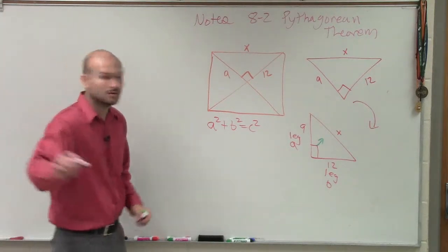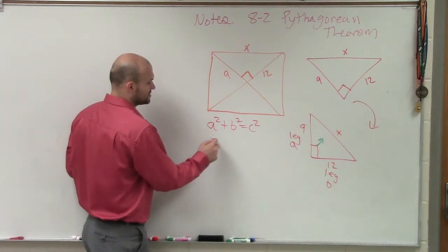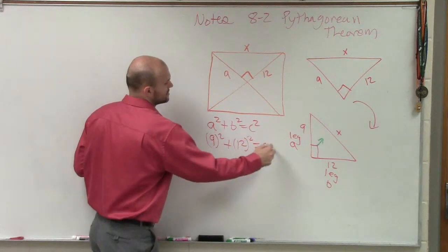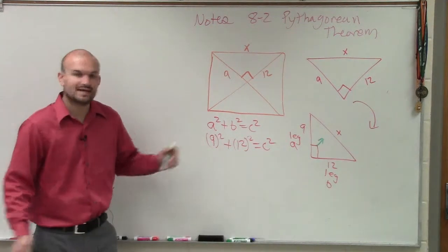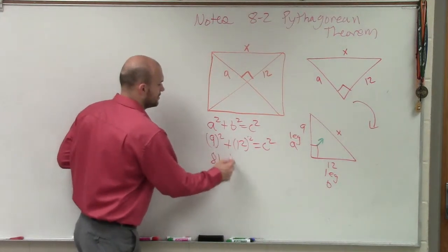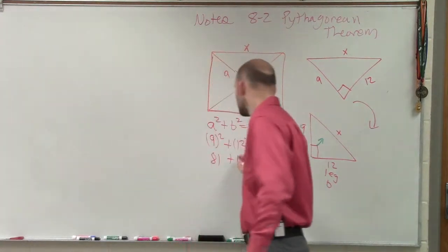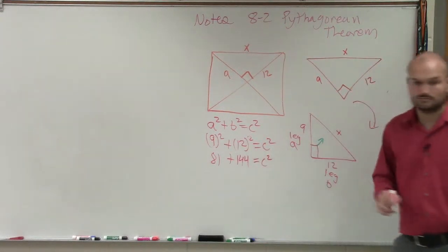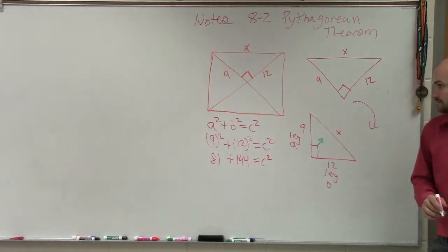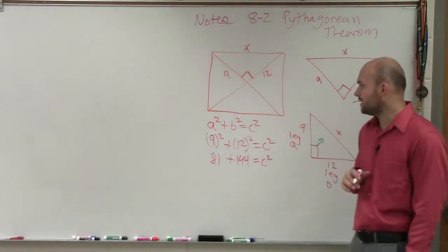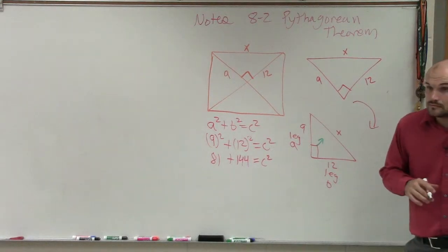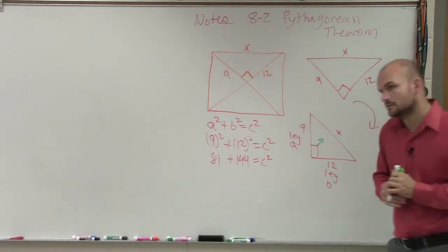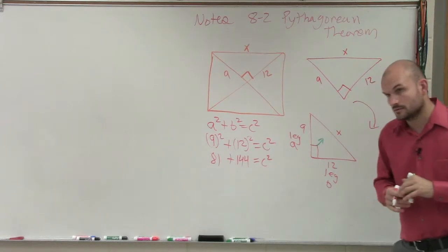In this case, I'll call this a and this b, those are going to be our two legs. So it's going to be 9 squared plus 12 squared equals c squared. Well, 9 squared is going to be 81 plus 12 squared, which is 144, equals c squared. Then 81 plus 144 equals 225.